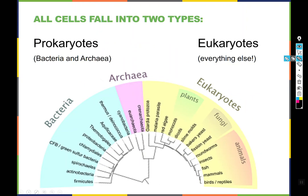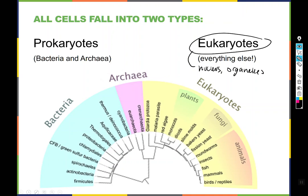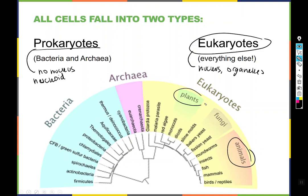All cells fall into two types. Eukaryotes are cells with a nucleus and organelles. Prokaryotes lack a nucleus and instead have an area of DNA called a nucleoid. They are very small and simple compared with eukaryotes. Prokaryotes include bacteria and archaea. Archaea are bacteria-like microorganisms, but they tend to prefer really extreme environments and are genetically distinct from a phylogenetic perspective, which is why they are separate.